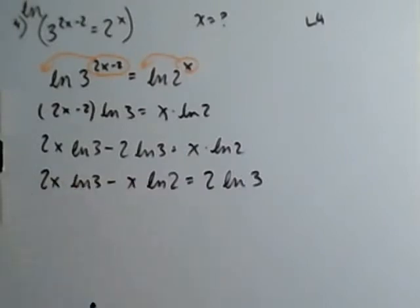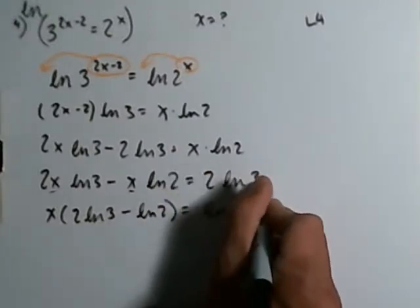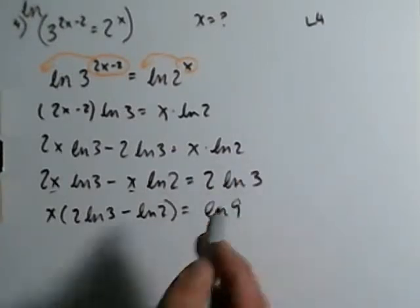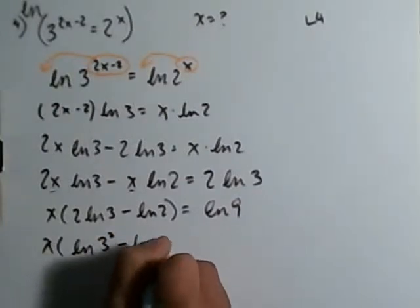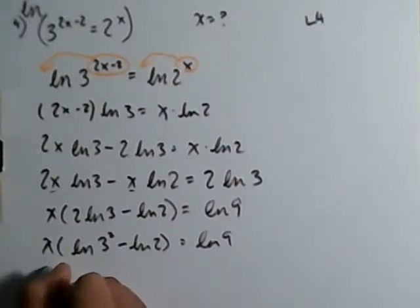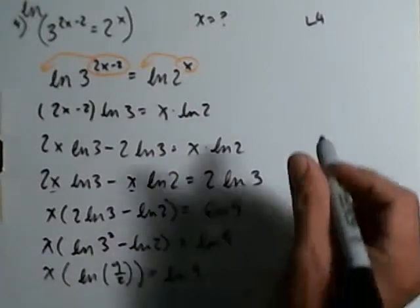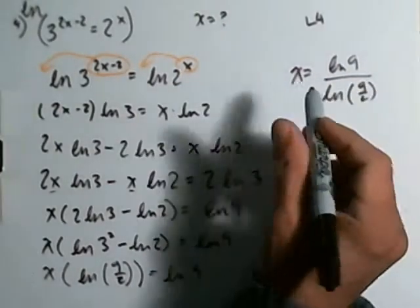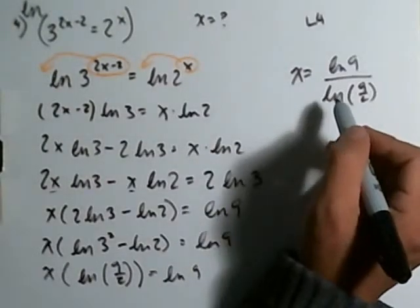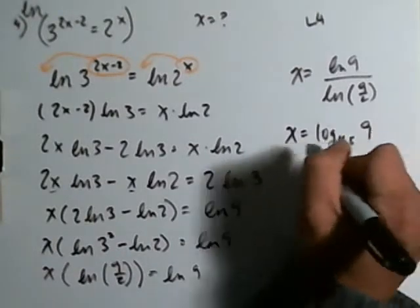At this stage, to solve for x, factor out x: x times the quantity 2·ln3 minus ln2 equals 2·ln3. Now, 2·ln3 equals ln9 (since 3² = 9), and 2·ln3 minus ln2 equals ln9 minus ln2 equals ln(9/2). So x equals ln9 over ln(9/2), which can also be written as log base 4.5 of 9. That's your final answer.